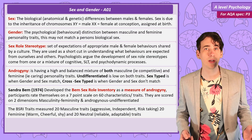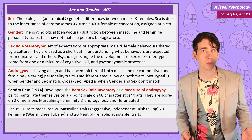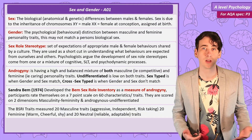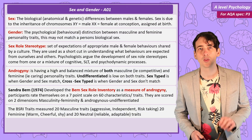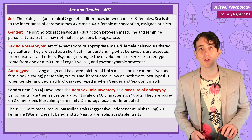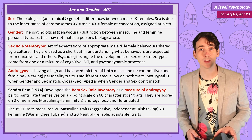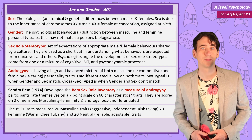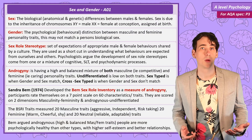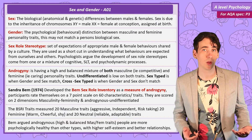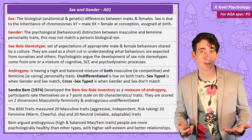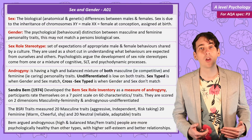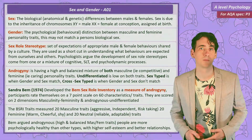The BSRI is a 60 question questionnaire that asks you to rate yourself out of 7 on a range of personality traits. Of those 60 traits, 20 are thought to be masculine, 20 feminine and the final 20 are neutral. So from your responses you can be scored on two dimensions: masculine and feminine. Bem argued that androgynous people — those with high balanced masculine and feminine traits — are more psychologically healthy than other types.